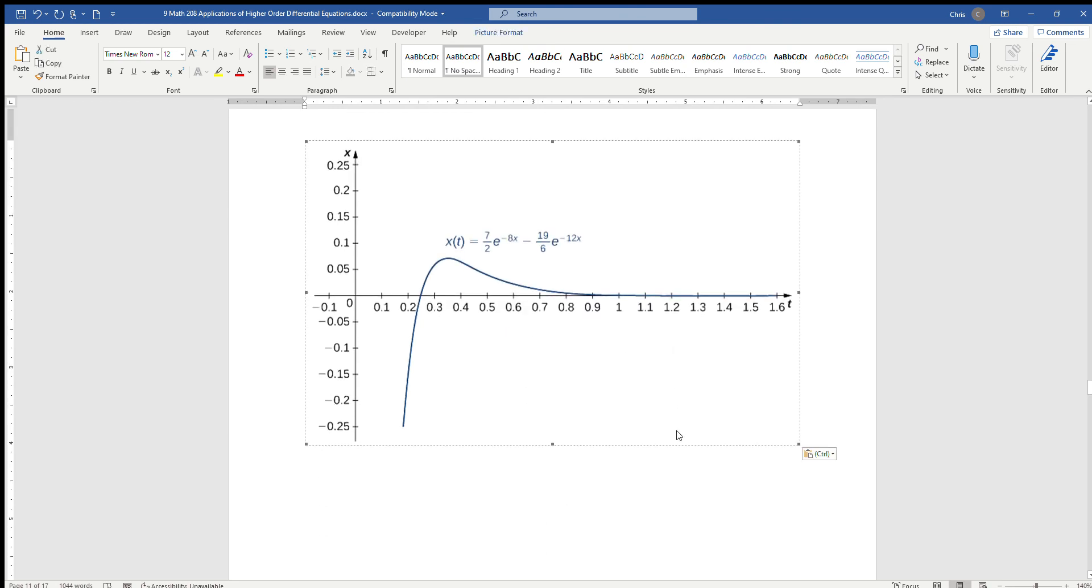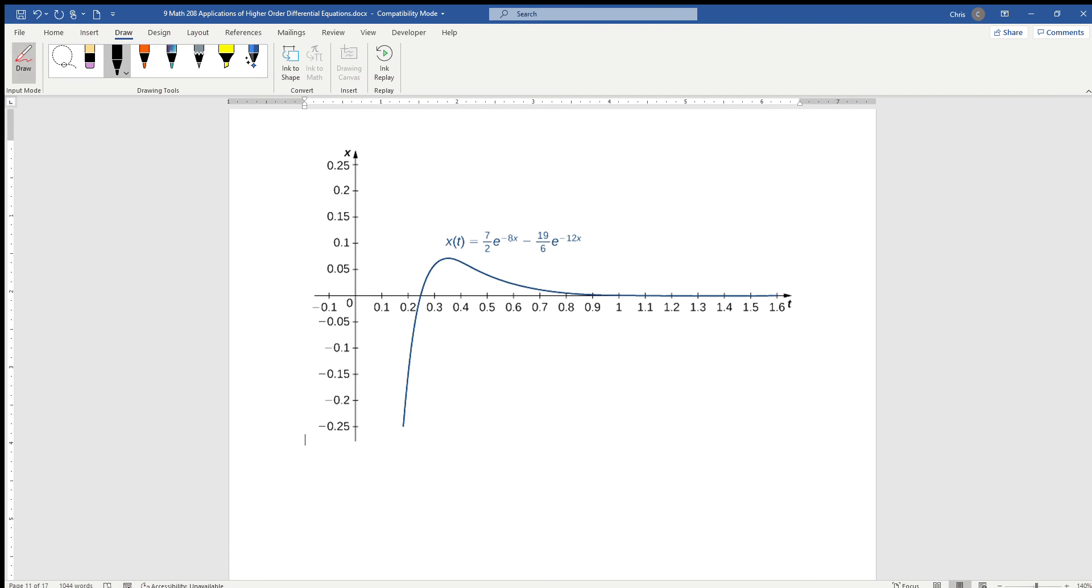How do we interpret the graph? A couple of things we can say is that we could very easily solve for this by setting x of t equal to zero. But we can see that somewhere between point two and point three, it's going to pass back through equilibrium. So somewhere right here, it's going to pass through equilibrium at about 0.25 seconds. Basically, it's going to bounce, pull down, and then a quarter of a second later, it's going to bounce back up.